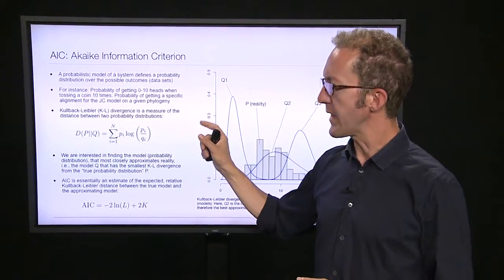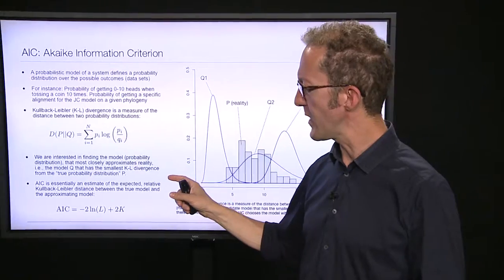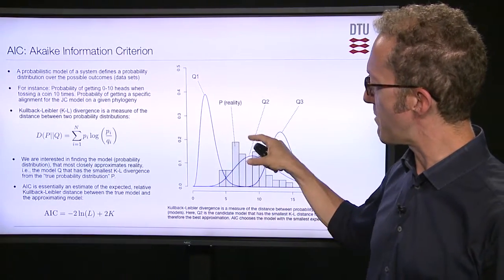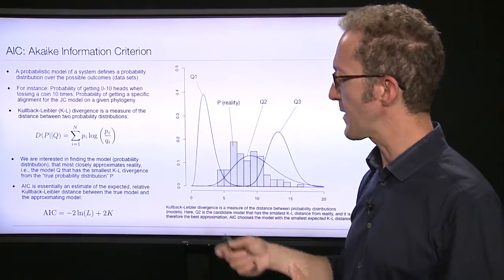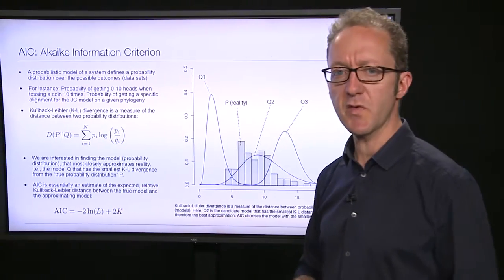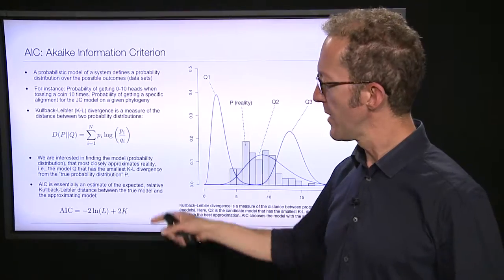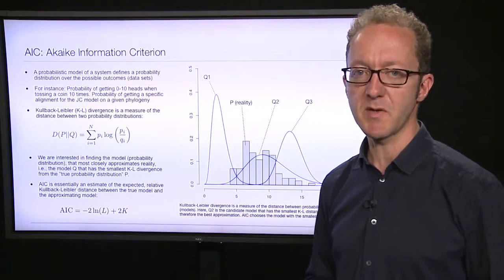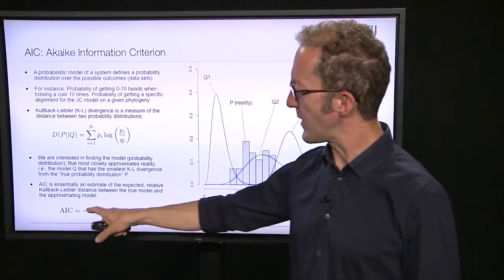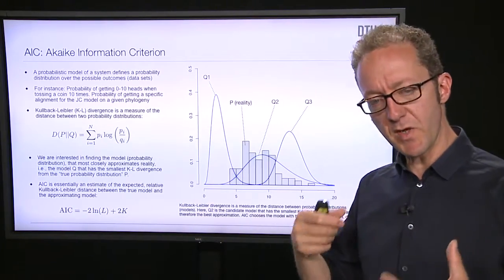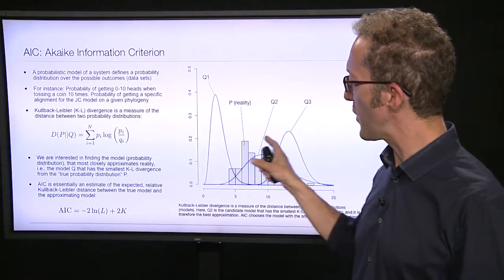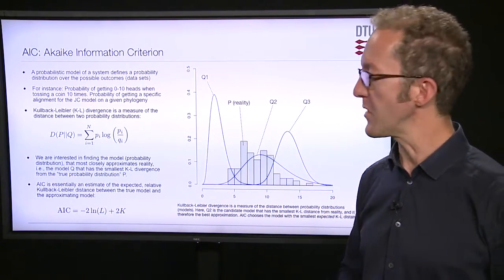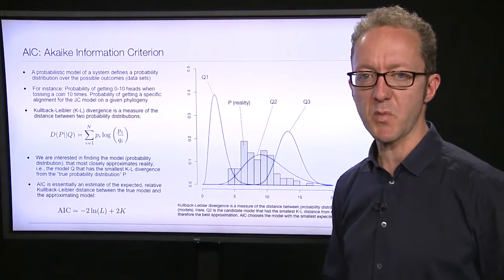This is the goal in AIC. The Akaike Information Criterion is a measure that essentially estimates the expected relative Kullback-Leibler distance between some model and full reality. It can't give you the absolute distance from full reality since we don't know what full reality is, but because of some tricky mathematics it can actually estimate the expected relative Kullback-Leibler distance. If we use AIC to estimate this relative distance for a set of different models, we can pick the model with the smallest relative distance — that would be the best model.